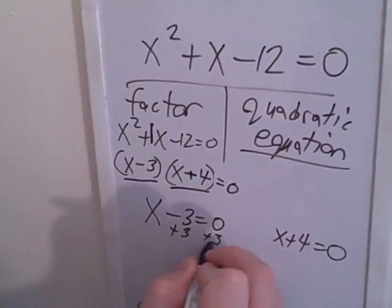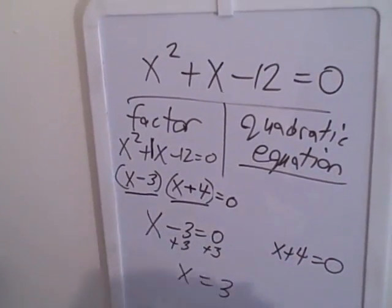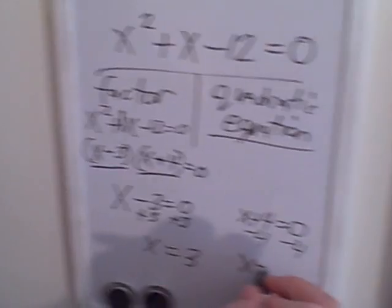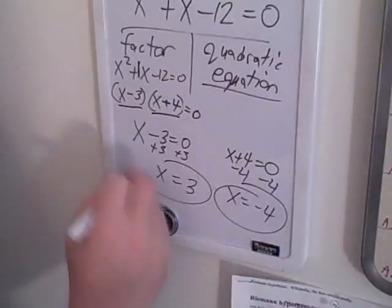Solve for x. x minus 3, add 3 to both sides, x equals 3. x plus 4, subtract 4 from both sides, x equals negative 4. And there are your two answers.